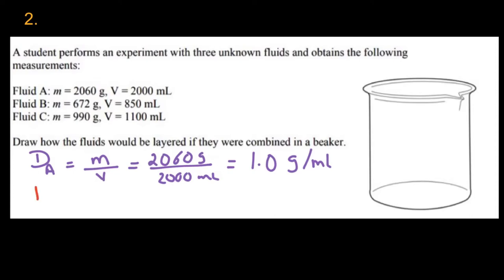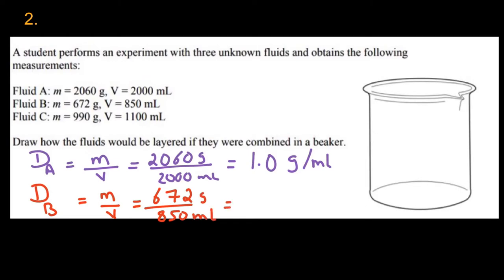The second one: density for B = M ÷ V = 672 grams divided by 850 milliliters. The answer is 0.8 grams per milliliter.